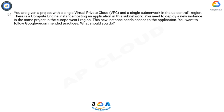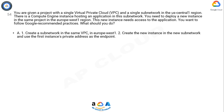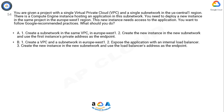You want to follow Google recommended practices. What should you do? Option A: 1) Create a subnetwork in the same VPC in europe-west1. 2) Create the new instance in the new subnetwork and use the first instance's private address as the endpoint.